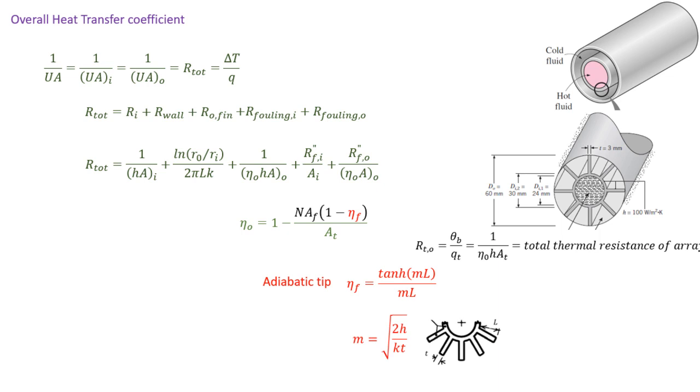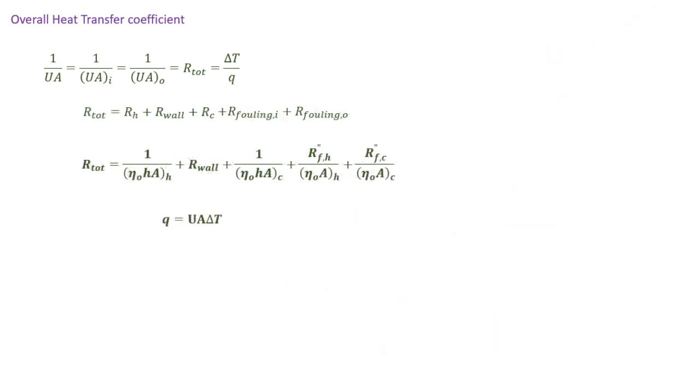In more general terms, this is the equation for the overall heat transfer coefficient. It takes into consideration that you may have fins on the hot side or the cold side. It also takes into consideration that you may have fouling, and if you don't have fins on the hot side or the cold side, just replace those efficiency terms with one.